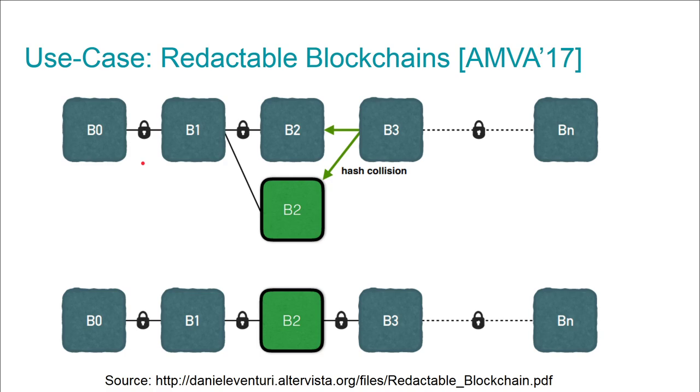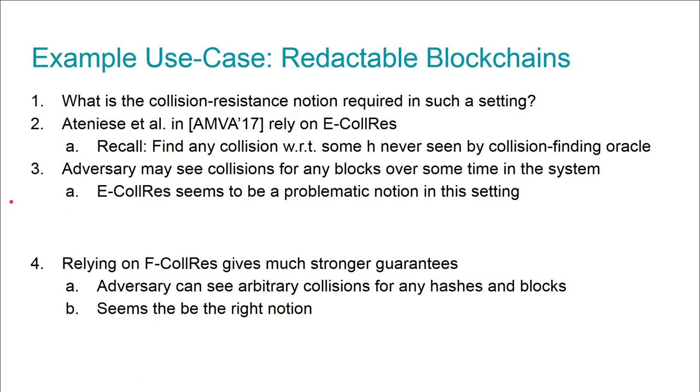However, looking back at our different collision resistance notions, what about if you want to instantiate that with enhanced collision resistance? Recall, if you see a collision for a single hash value, you may be able to find arbitrary other collisions for that particular hash value. There may be a problem here, depending on the use case.